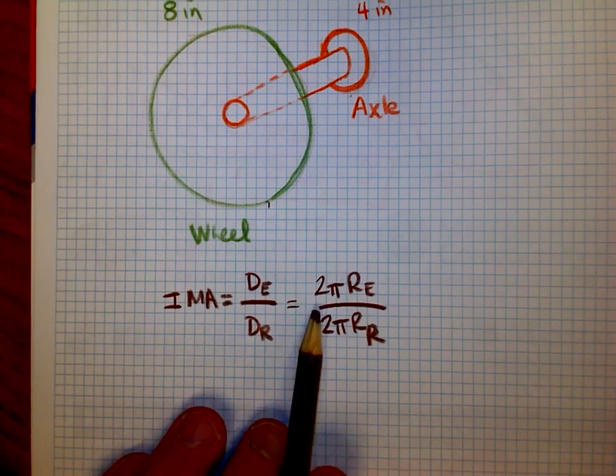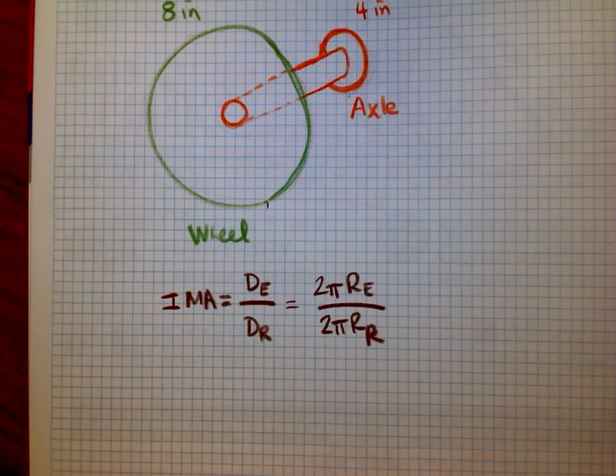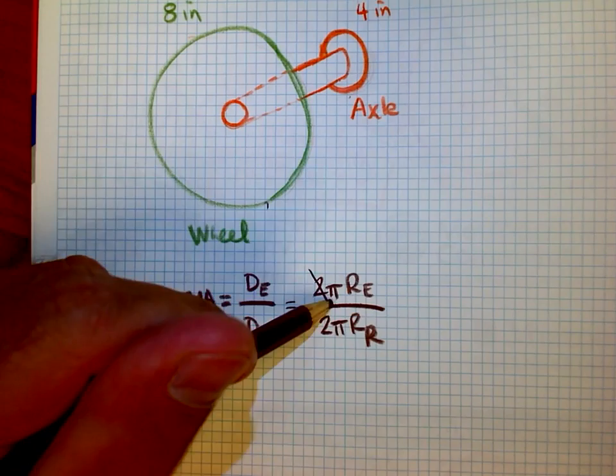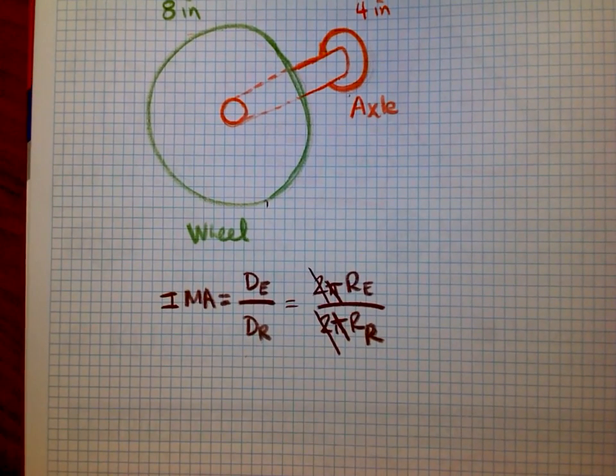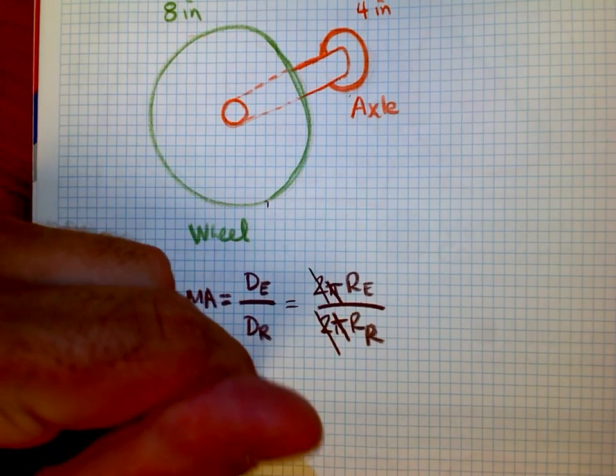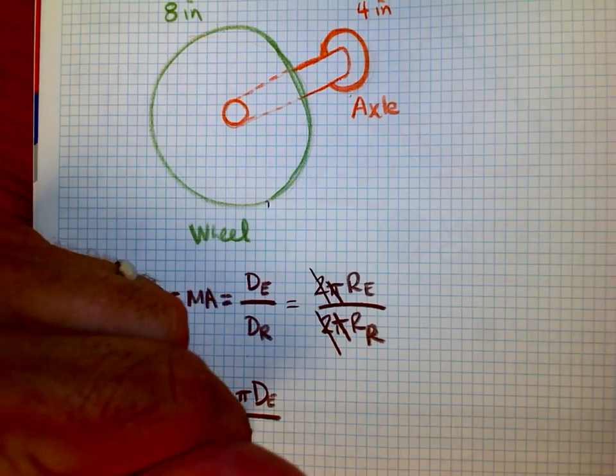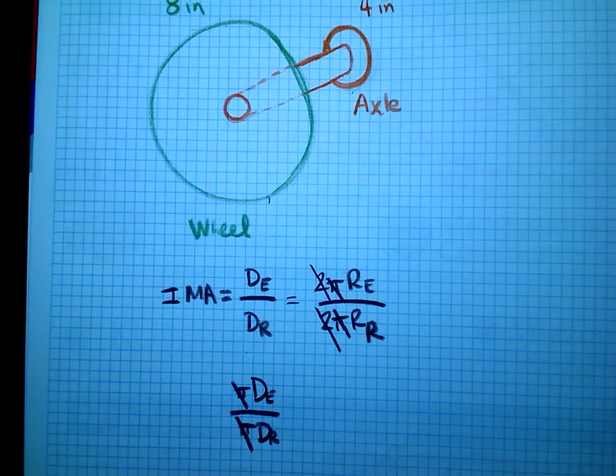And look what happens in our formula. Circumference of the effort, circumference of the resistance. In our formula, it doesn't matter which one we talk about. The 2's go away and the π's go away. So our distances are really like radiuses. Or we can also do π times the diameter of the effort arm over π times the diameter of the resistance arm. And the π's go away, so I'm comparing diameters.